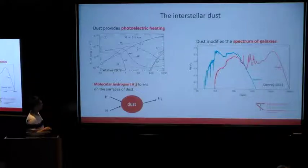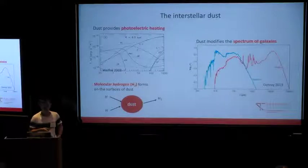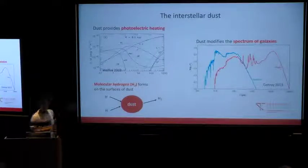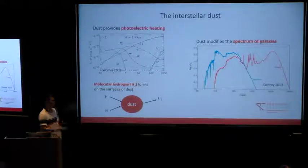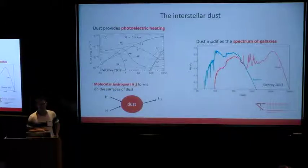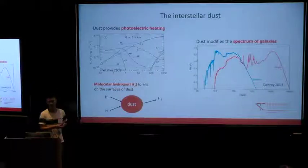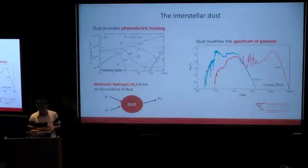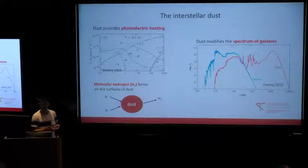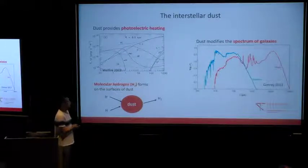We also know that dust provides an ideal place for the formation of molecular hydrogen, which is important not only in the ISM, but also potentially in galaxy outflows as well, because people have been proposing that molecular outflows might form in situ in galaxy winds. And dust also modifies the spectrum of galaxies by reprocessing UV light into infrared.